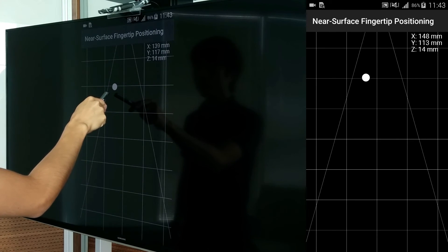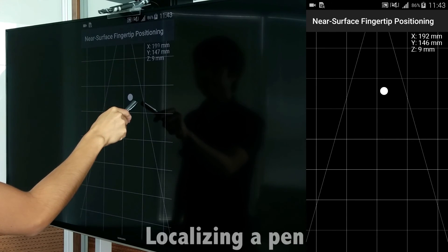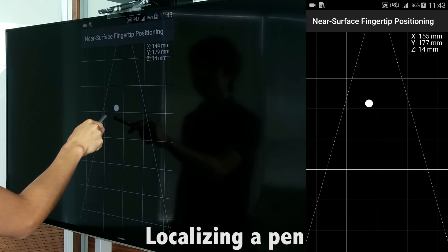Finally, we note the pointer does not have to be a finger. SymmetraSense works with various long-shaped pointers such as pens, styluses, or even gloved fingers.